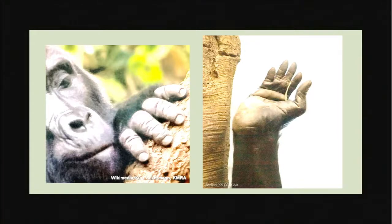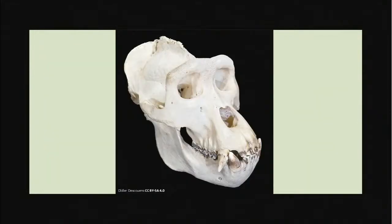One gorilla adaptation is the opposable digits on both their feet and hands, which improves their grasp and helps them better manipulate their environment. Their hands are very human-like, but the skin on their fingers and especially their knuckles is much thicker due to knuckle-walking. Another adaptation is the shape of their teeth, particularly their molars. Because gorillas are herbivores, they need teeth that allow them to grind plant material. Since they are not ruminants, they have microbes in their colon that break down plant cellulose through fermentation — making them hindgut fermenters.